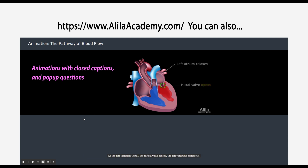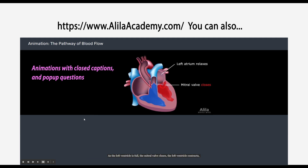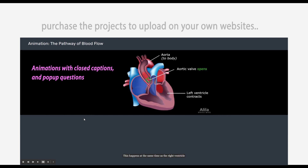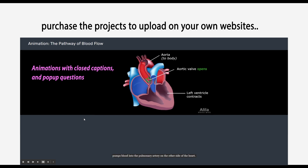As the left ventricle is full, the mitral valve closes. The left ventricle contracts. The aortic valve opens, and oxygen-rich blood is pumped into the aorta to reach all parts of the body. This happens at the same time as the right ventricle pumps blood into the pulmonary artery on the other side of the heart.